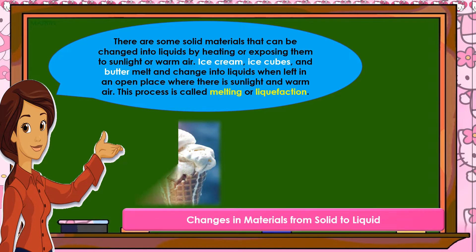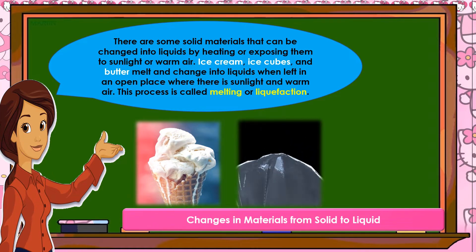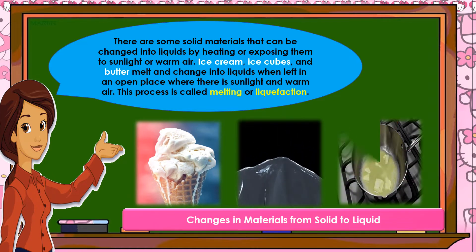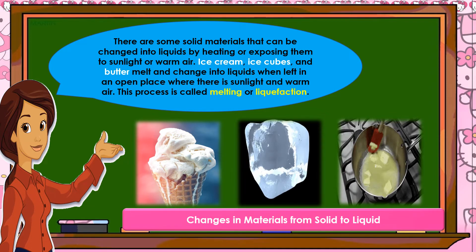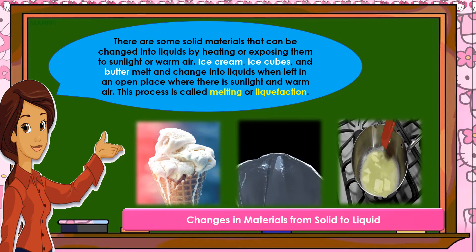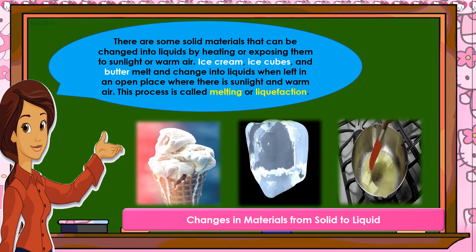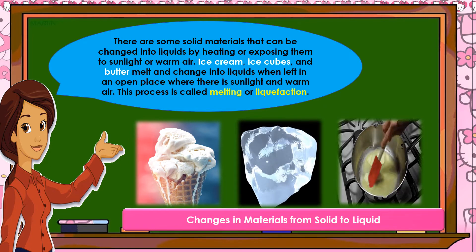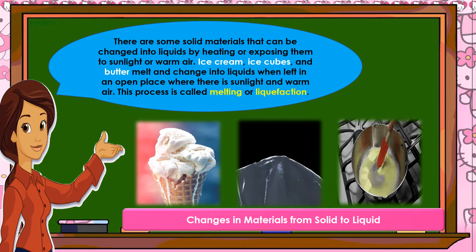There are some solid materials that can be changed into liquids by heating or exposing them to sunlight or warm air — like ice cream, ice cubes, and butter. They melt and change into liquids when left in an open place where there is sunlight and warm air. This process is called melting or liquefaction.